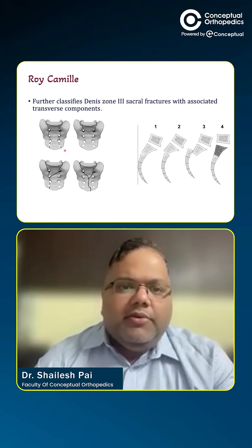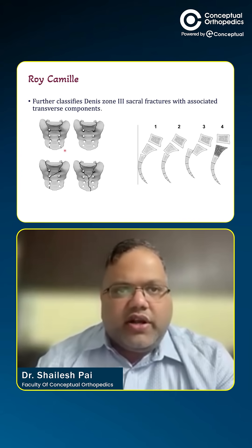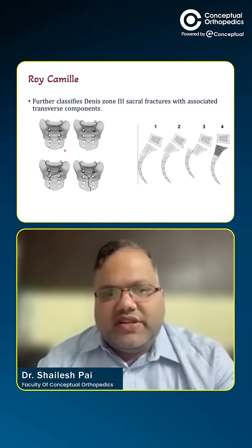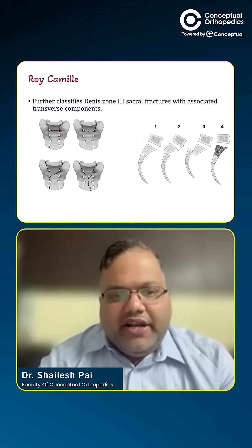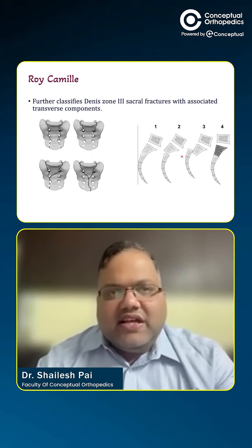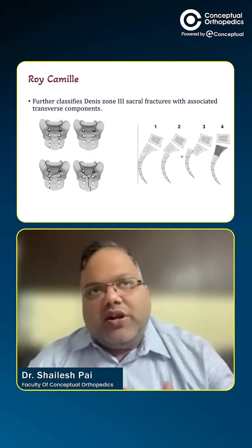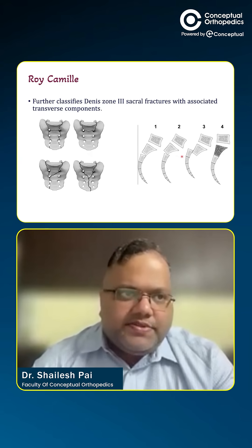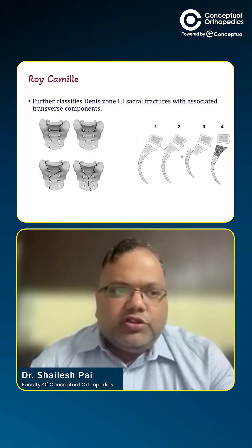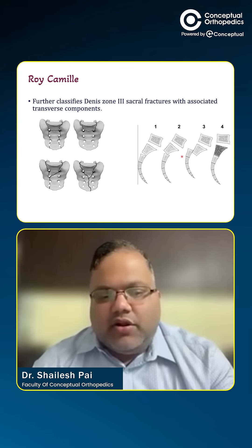The Roy-Camille classification further classifies zone 3 injuries — that is, fractures medial to the sacral foramen. These are CT-based classifications and tell us what has happened on the CT scan. It divides into basically three types, with a fourth type added later as a modified Roy-Camille classification.